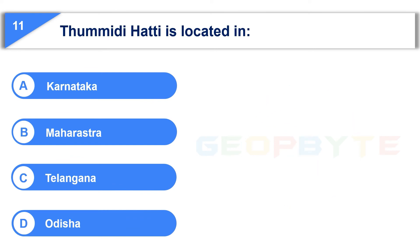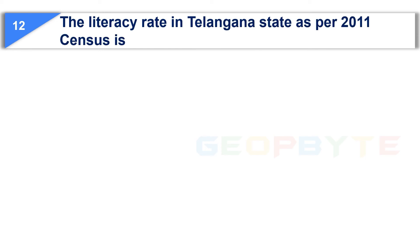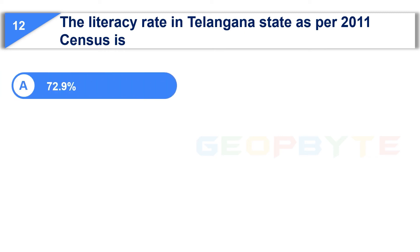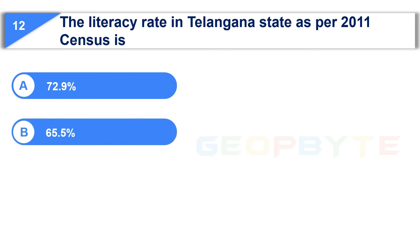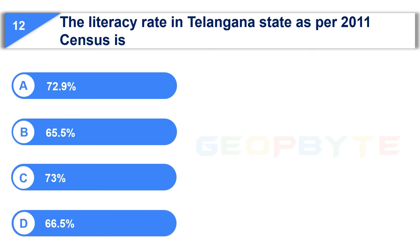Your time is up and the correct answer is Option C: Telangana. Moving to the 12th question: The literacy rate in Telangana state as per 2011 census is — Option A: 72.9%, Option B: 65.5%, Option C: 73%, Option D: 66.5%. Your time starts now.